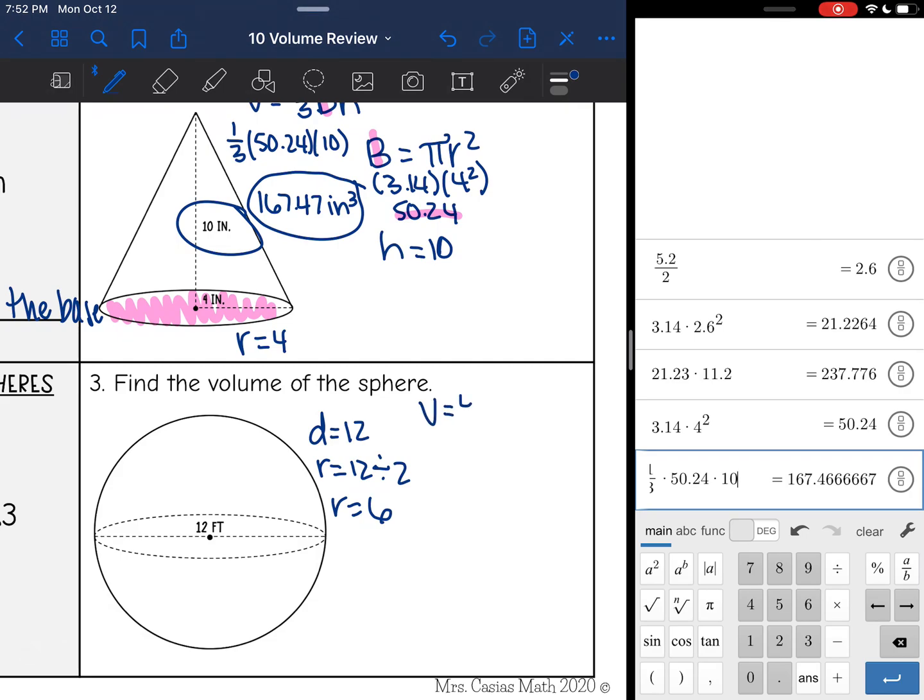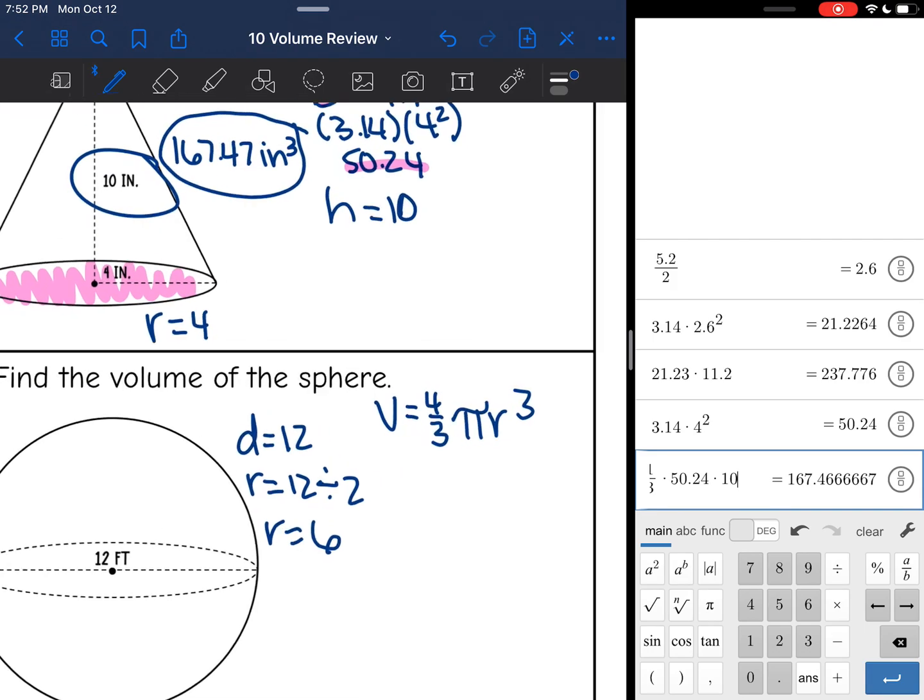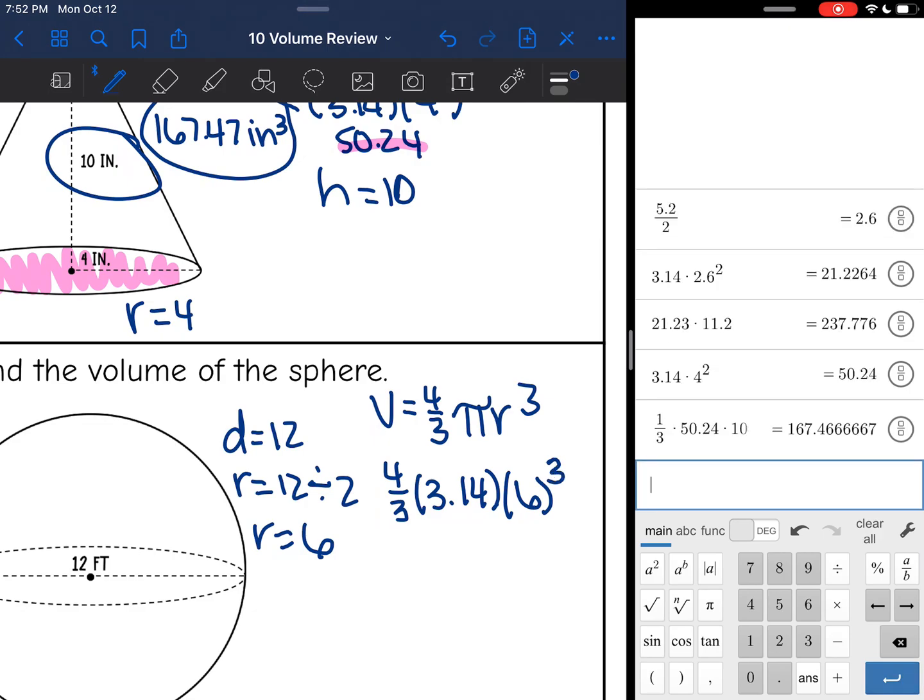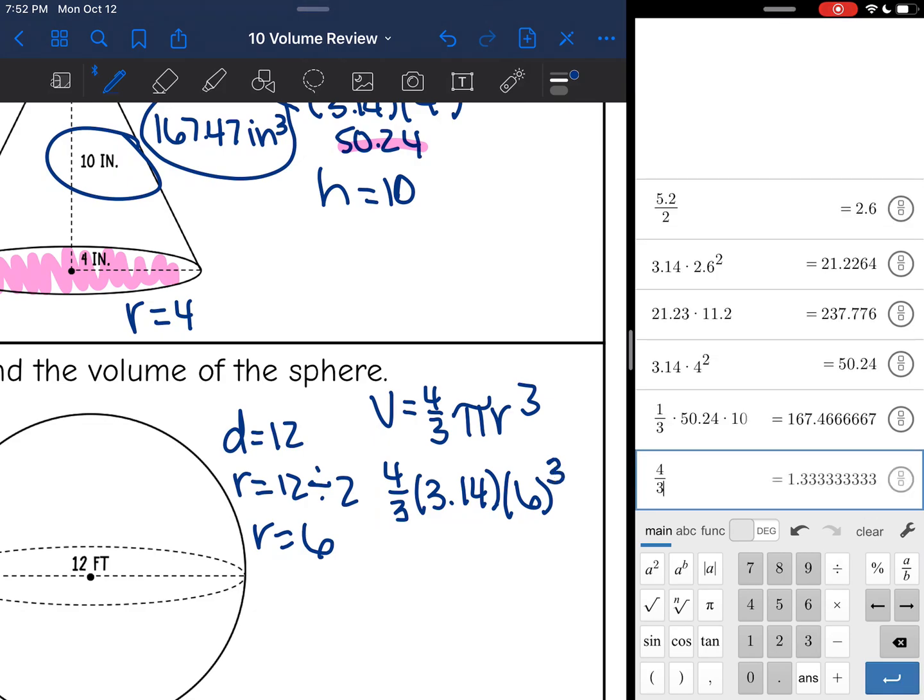I'm going to do V equals four-thirds pi r cubed. So it'll be four-thirds times 3.14 times my radius of 6, and four-thirds times 3.14 times 6 to the third power is 904.32 feet cubed.